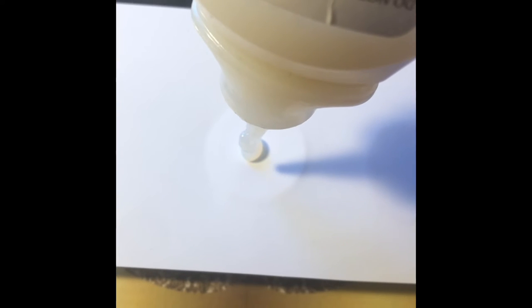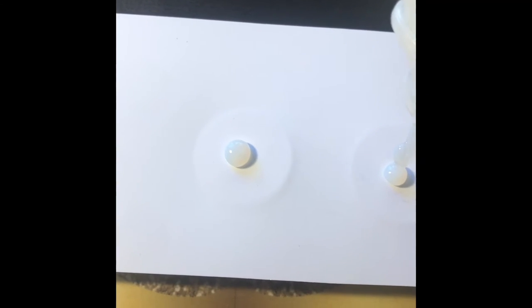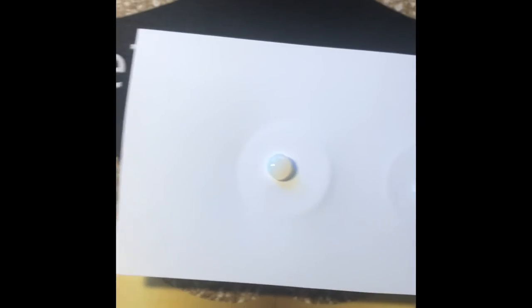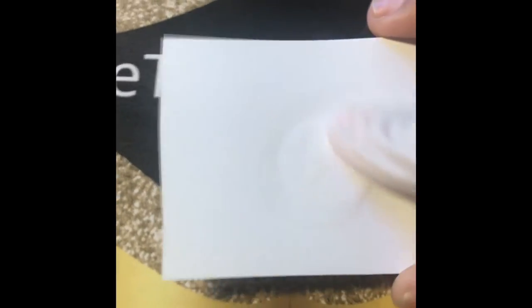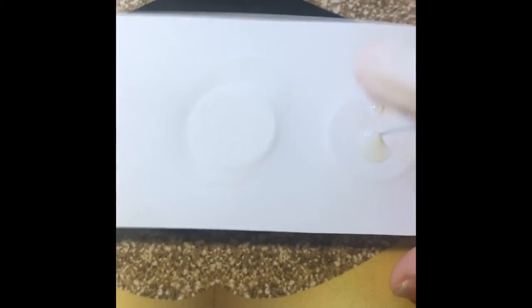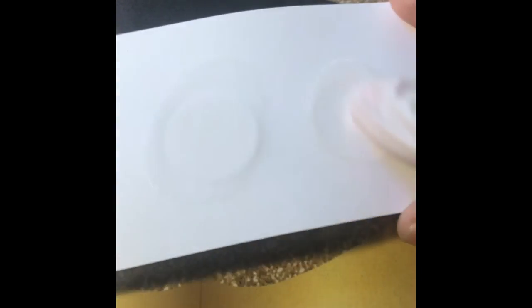Once you have waited about 10 to 15 minutes for the front to dry, you want to flip it over and we're going to do our first coat on the back. So I usually do two, sometimes I do one depending on how much I put on the back, but more than likely I'm doing two coats on the back.